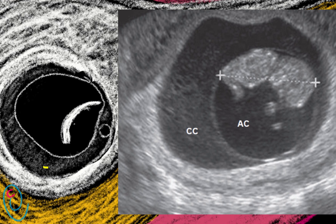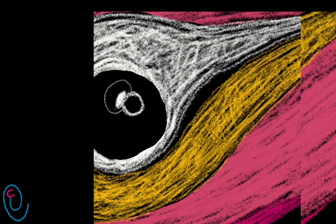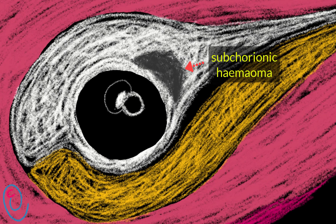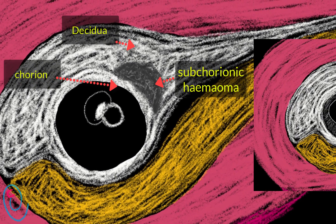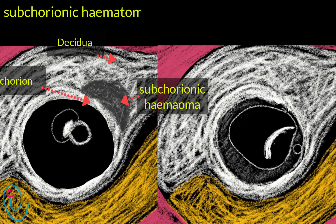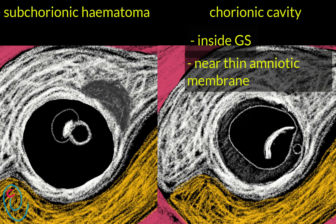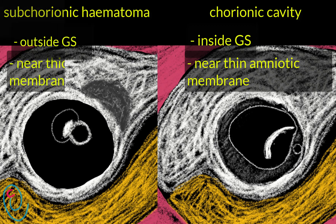The chorionic space may contain internal echoes, and in such a case it may be misdiagnosed as subchorionic hematoma. Subchorionic hematoma is a blood collection between the chorion and the decidua. The difference is that the chorionic cavity is present inside the gestational sac, adjacent to a thin amniotic membrane, while subchorionic hematoma is present outside the gestational sac, adjacent to a thick chorionic membrane.